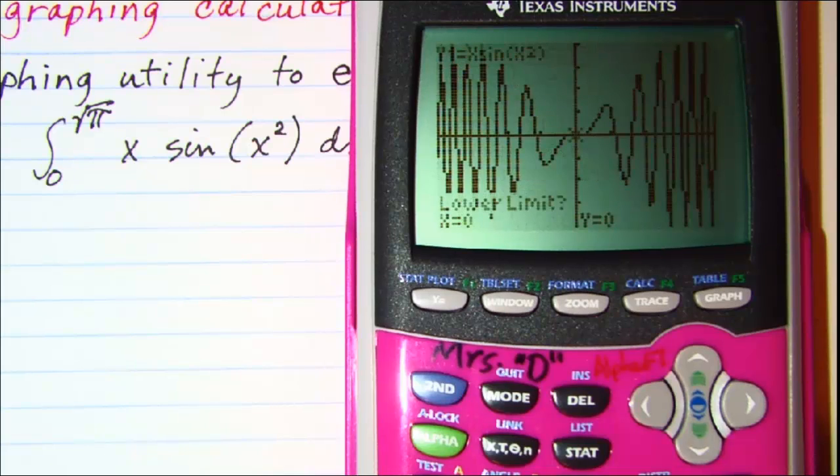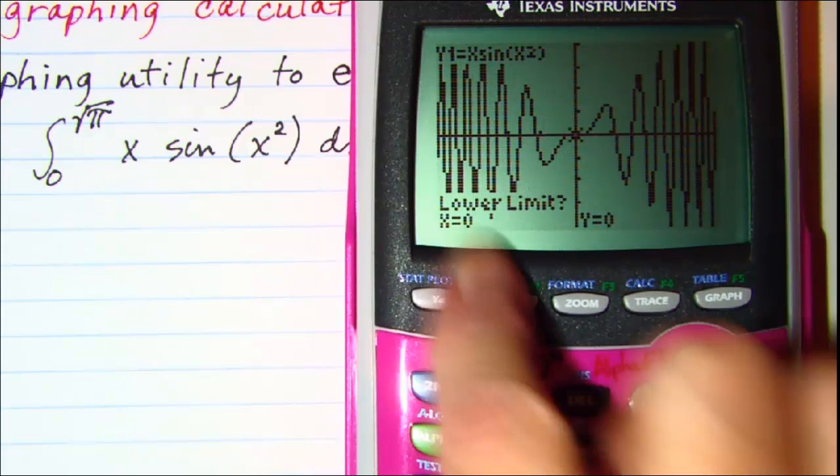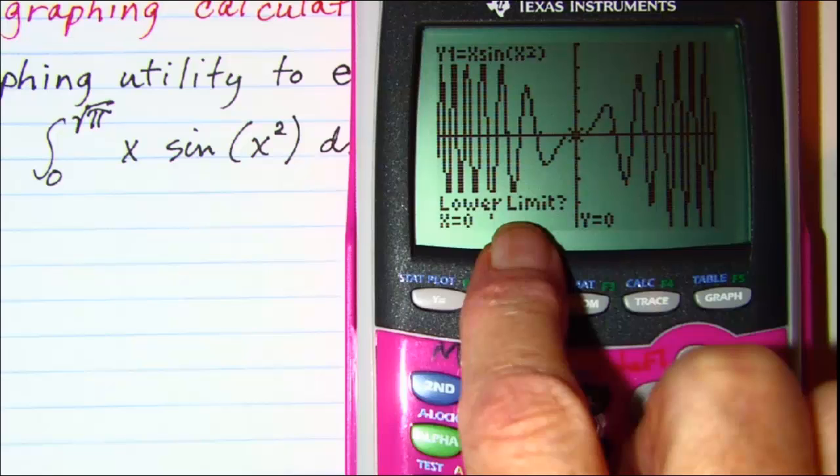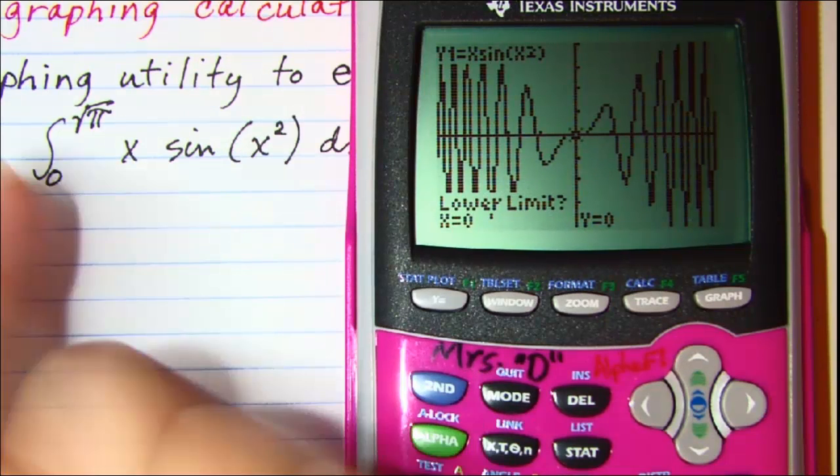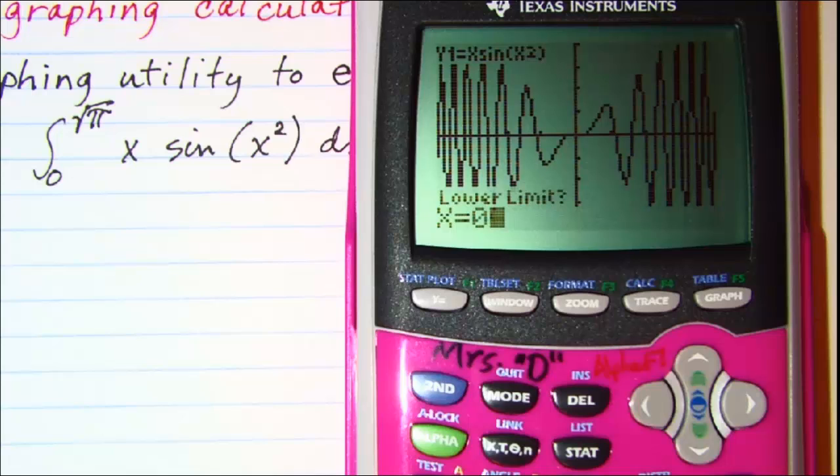So I'll pick 7 and the first thing the calculator asks for is the lower limit. Now we see 0 is our lower limit so we'll enter 0 and then press enter.